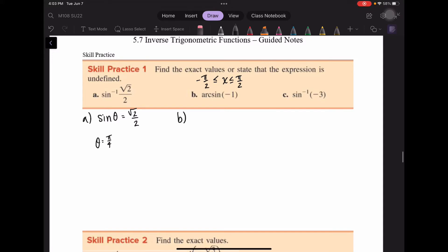Part B, we are finding the arcsine, which is the same thing as the inverse, of negative 1. This is saying that the sine of some angle is equal to negative 1. When is our y value negative 1? y is negative 1 at 3 pi over 2. But that's not in our interval. We need to go clockwise instead of counterclockwise here, a coterminal angle, which would be for theta equal to negative pi over 2.